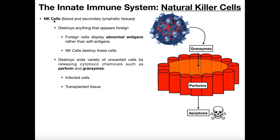Sometimes we call natural killer cells NK cells for short. They're called natural killer cells because they basically survey your entire body and look for anything that's abnormal. This process is what we call immunological surveillance — they're always on the lookout for anything that doesn't appear quite right or anything that appears foreign.